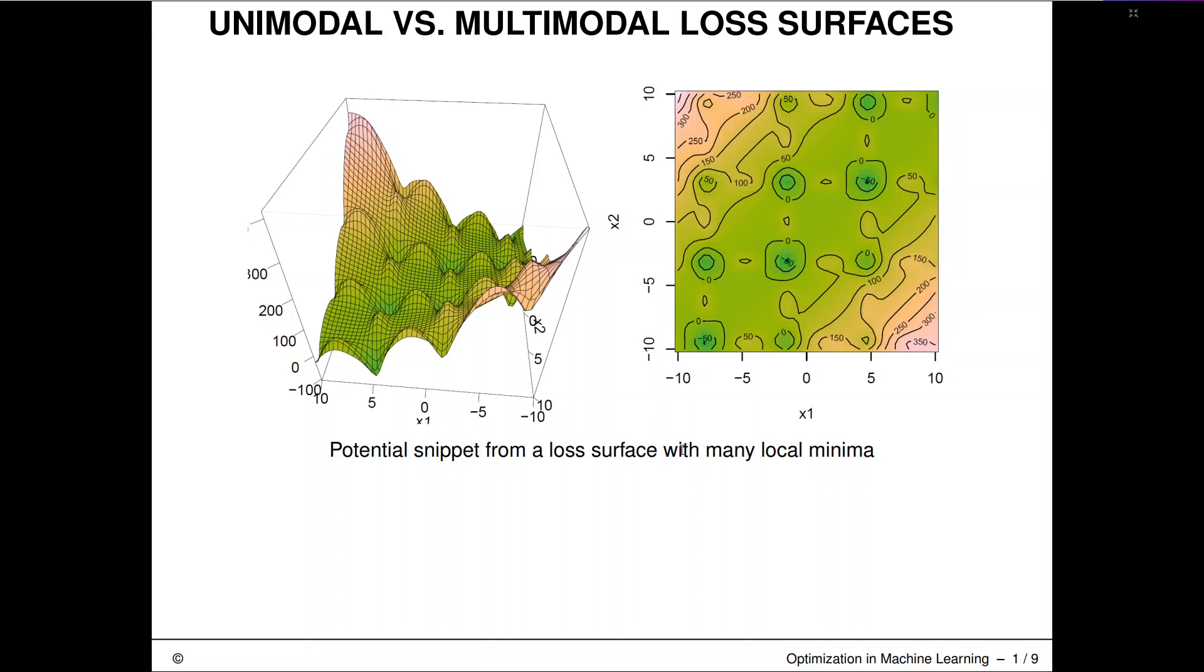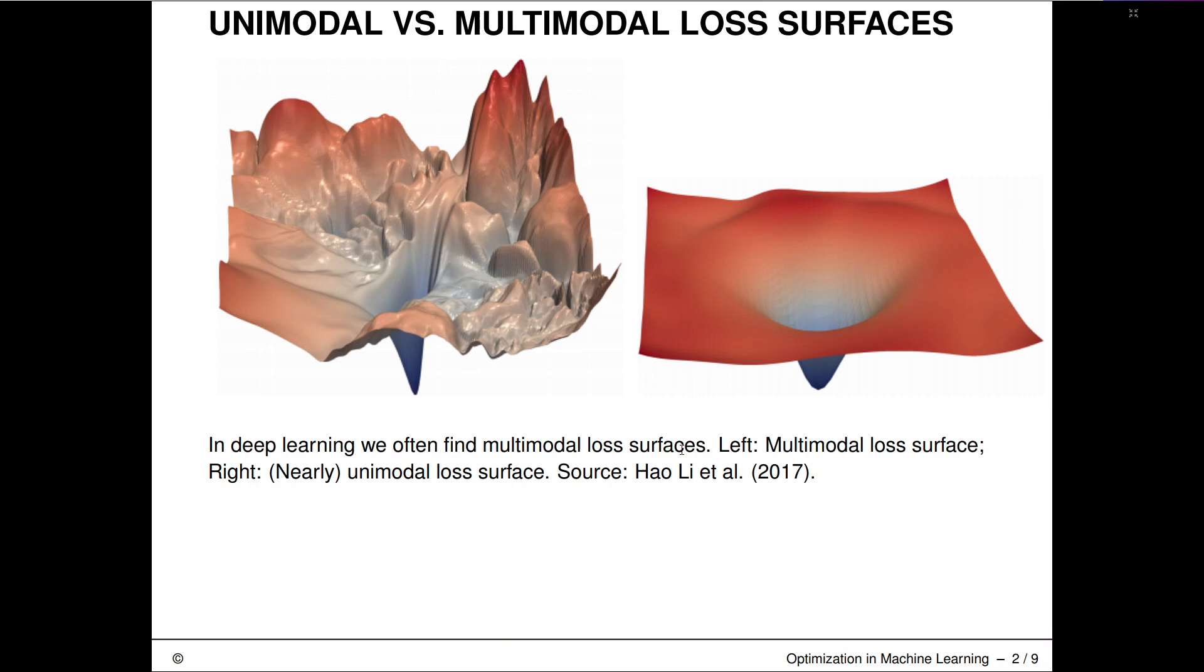This can also occur if you look into deep learning error landscapes. Many simpler machine learning models sometimes have ensured convex or unimodal error landscapes. Support vector machines are constructed exactly around that property. But for deep learning in particular, it can really look like this and we can get stuck in all of these local minima.